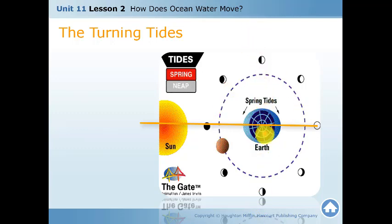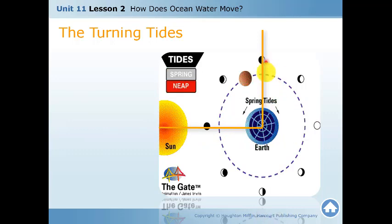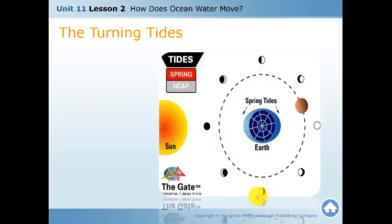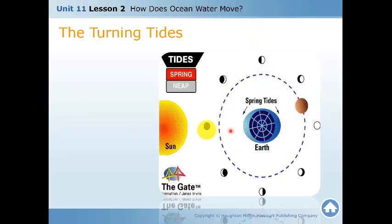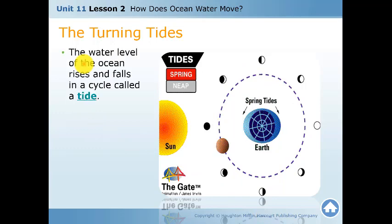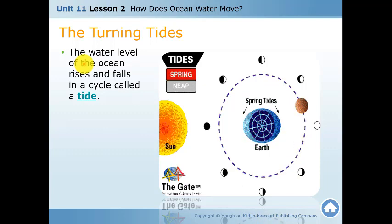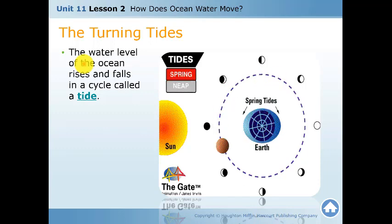The neap tide is when the moon forms an L-shape with the Earth and the sun. At this point it is a neap tide — not a straight line but an L. The water levels on the ocean rise and fall in a cycle called a tide, which is the attraction of the water level to the moon or to the sun.